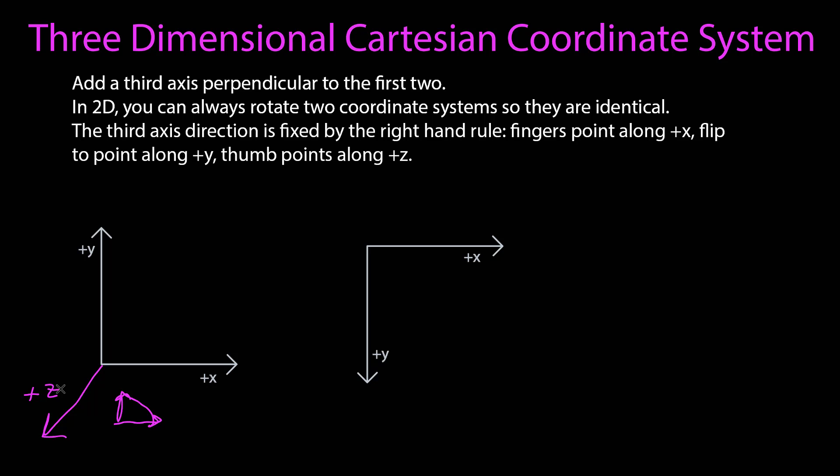For the second one, if I point my fingers along x and I flip them so that they point along y, my thumb will be pointing into the surface, so the positive z will be going in. And so this is how you can set up your coordinate system.